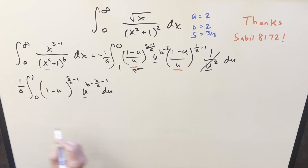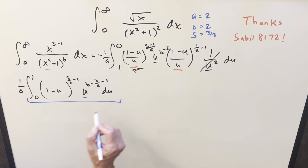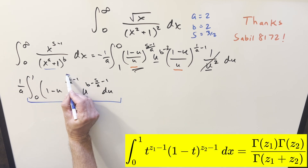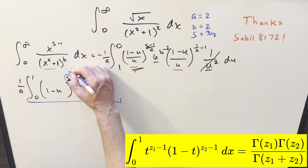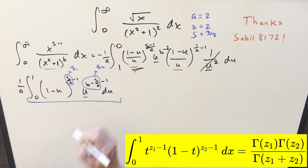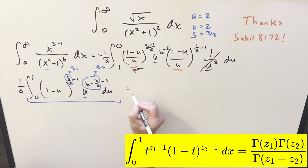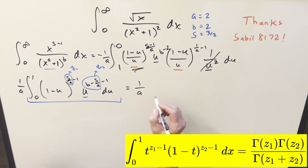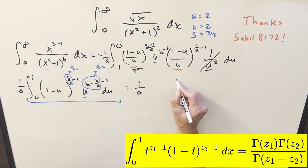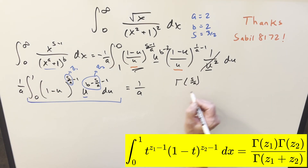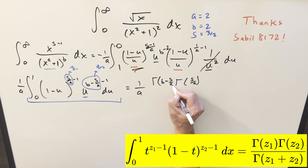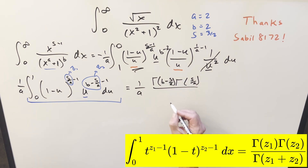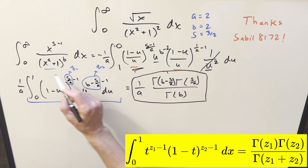At this point we're getting somewhere: what we have is actually the beta function, with inputs s/a and b minus s/a. Calling these z1 and z2, we apply the beta function formula. With the constant 1/a out front, we get gamma(s/a) times gamma(b minus s/a) divided by gamma(b). This is our general formula.